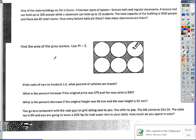Here we have a mixed bag of review. Let's start with a system of equations problem. One of the main buildings at DU, that's Denver University, is Sturm Hall. It has two types of spaces: lecture halls, let's call those L for lecture halls, and C for classrooms.